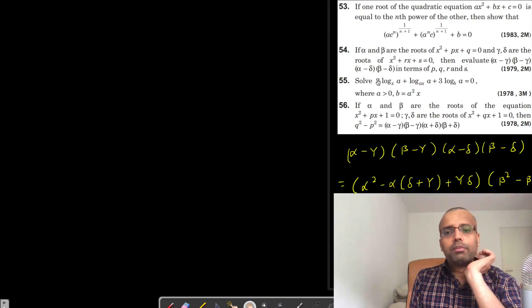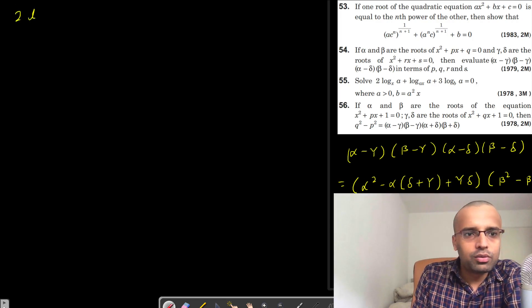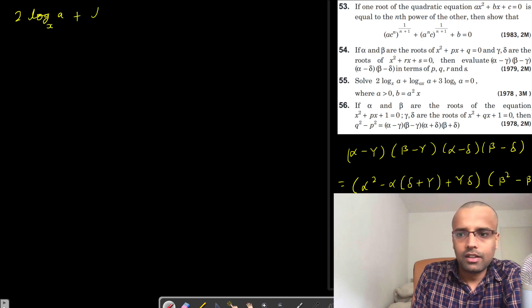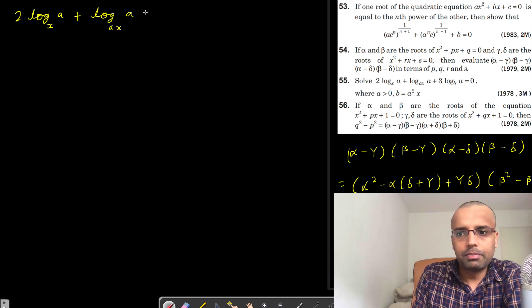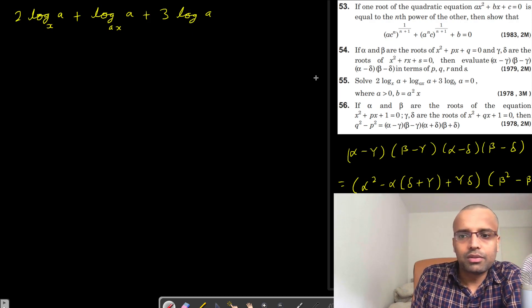Next, we will see problem number 55. So what are we talking about? Solve this. I have the equation 2 log a to the base x, plus log of a to the base ax, plus 3 log a to the base b, is equal to 0, where a is greater than 0 and b is a squared x. So I will write a squared x here, and this is equal to 0.